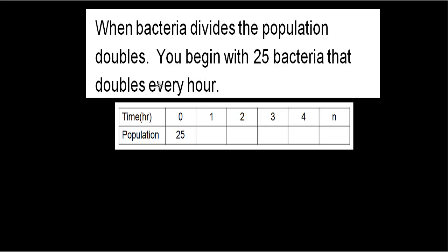You begin with 25 bacteria that doubles every single hour. We have a chart where we're going to fill in how many bacteria we'll have every hour that passes. So at time zero, I have 25 bacteria. If the bacteria doubles every hour, at the end of one hour, I will have 50 bacteria.